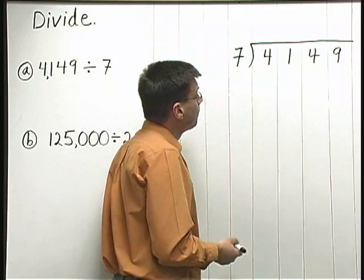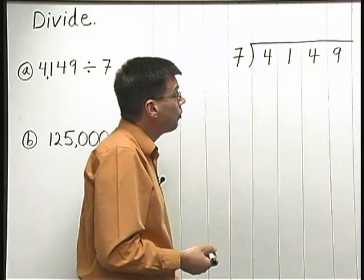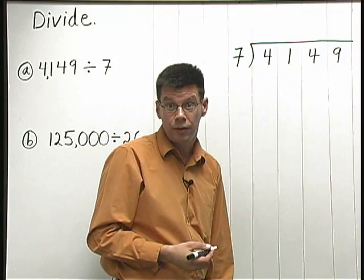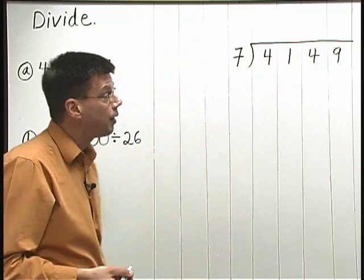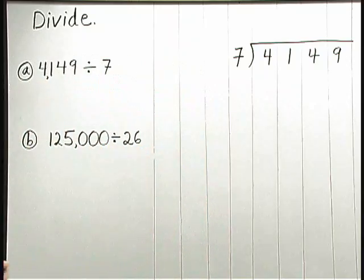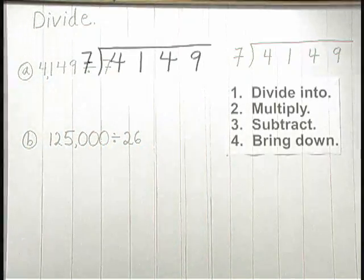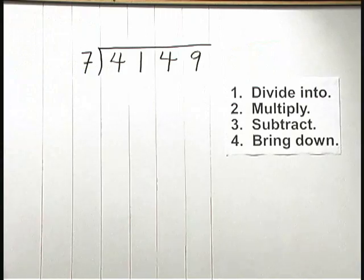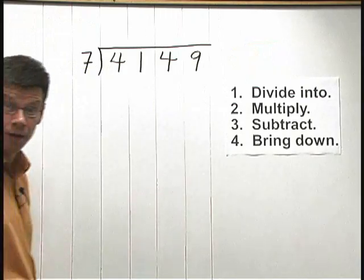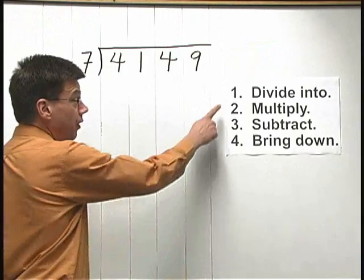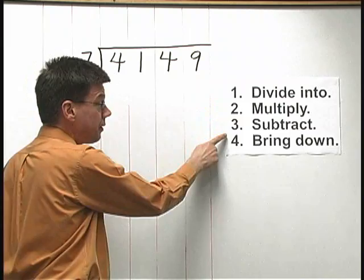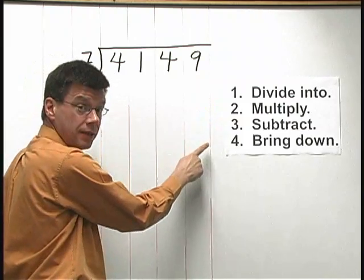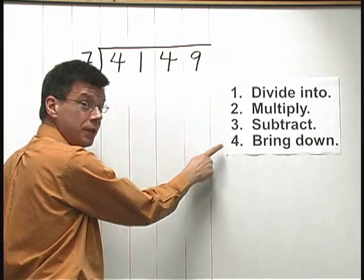Now, long division involves a series of 4 steps that we repeat over and over again. The 4 steps are: divide into, multiply, subtract, and bring down.